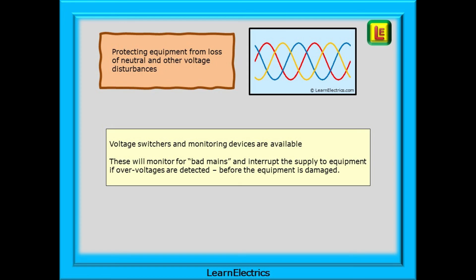There are ways of protecting equipment from loss of neutral and other voltage disturbances. Voltage switches and monitoring devices are available. These will monitor for bad mains and interrupt the supply to equipment if over-voltages are detected and act before the equipment is damaged.